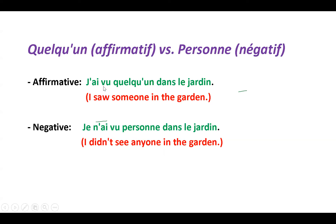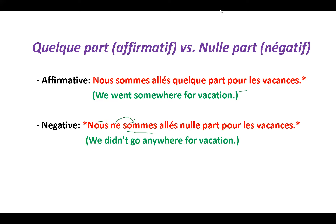In passé composé, 'quelqu'un' (someone) becomes 'personne' (no one). For example, 'j'ai vu quelqu'un dans le jardin' — I saw someone in the garden. Negation: 'je n'ai vu personne dans le jardin.' Note: for 'personne,' unlike other negations, it is placed after the past participle of the verb. So 'ne' precedes the auxiliary, and 'personne' comes after the past participle.